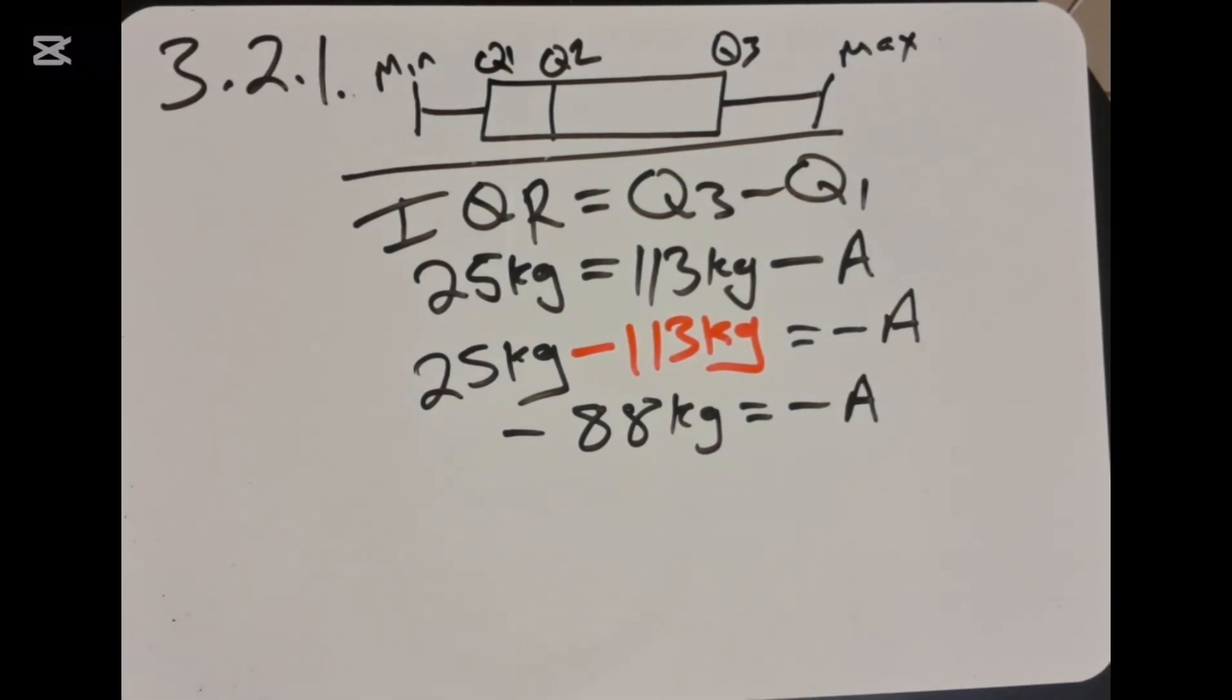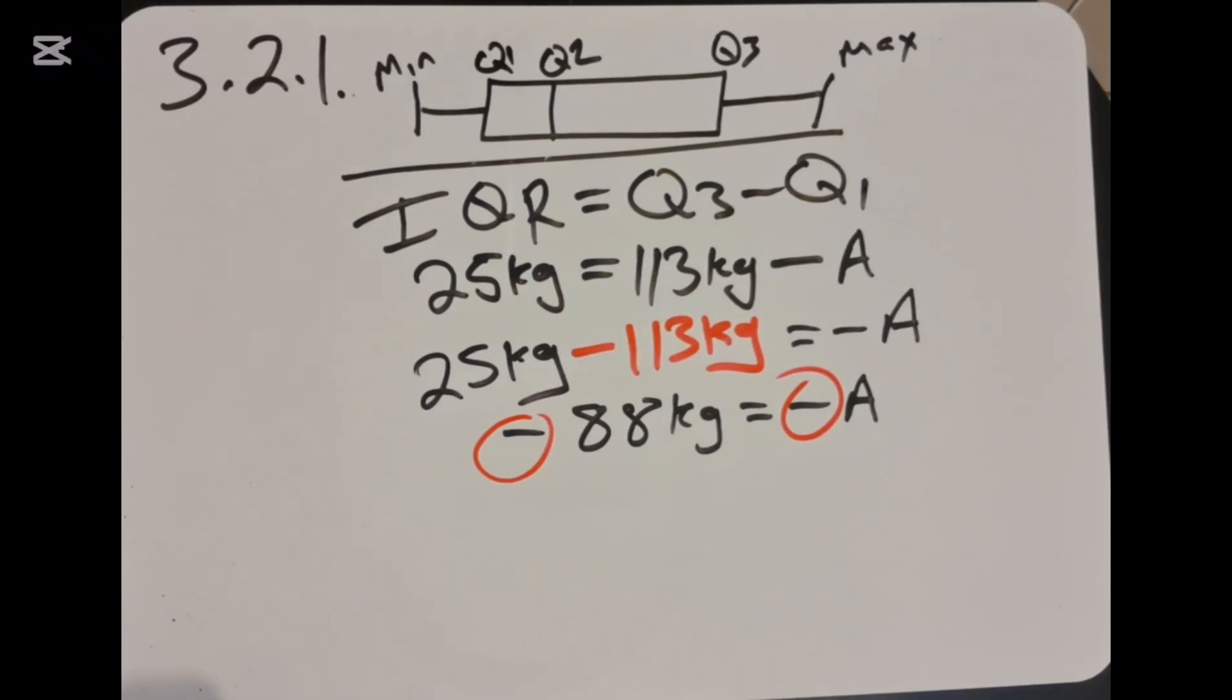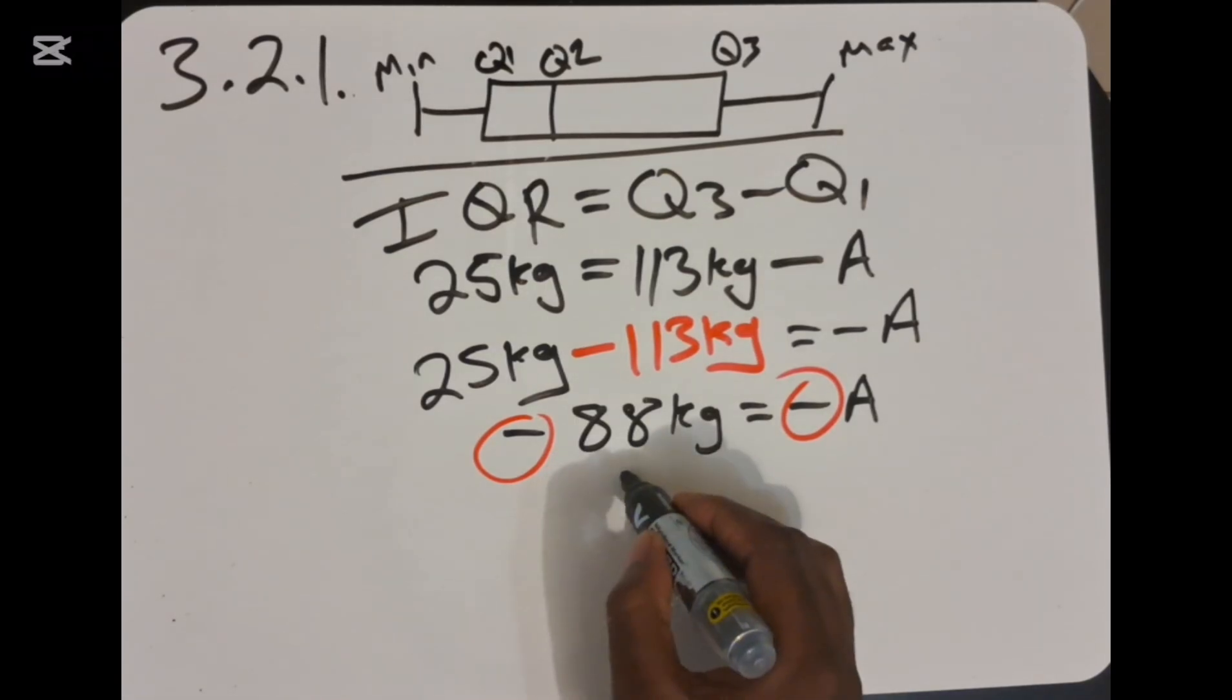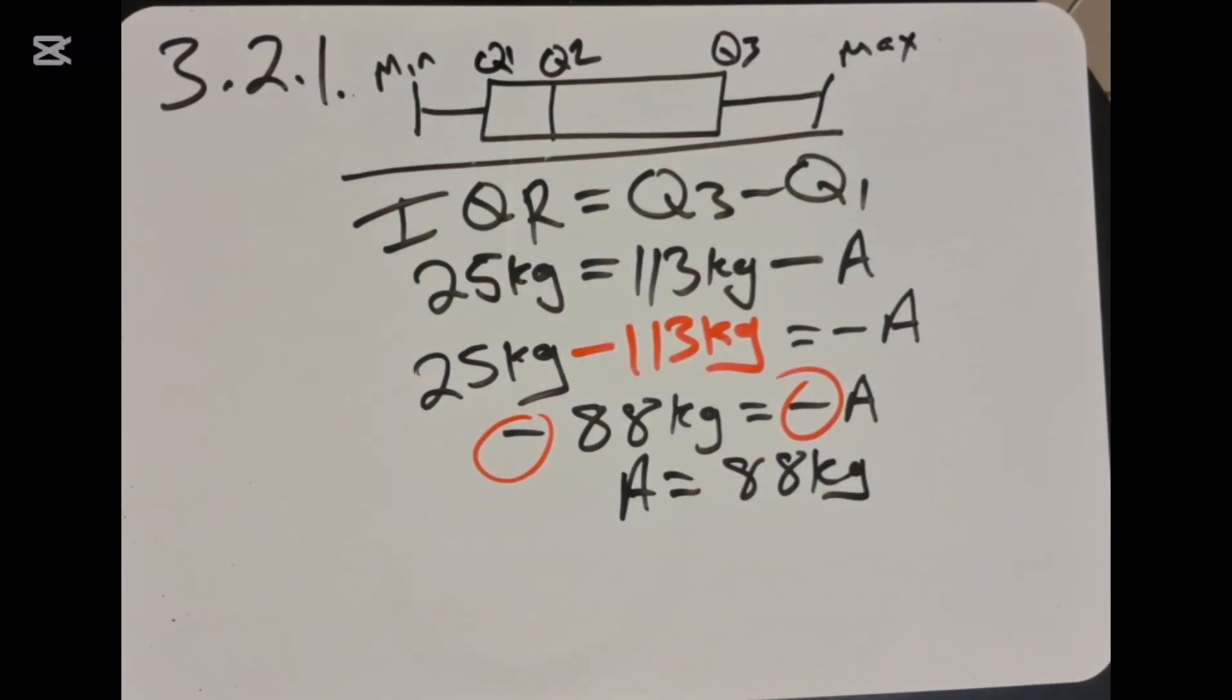We remain with negative 88 kg is equal to negative A. If you check, we cannot have a negative weight. So because we are having negative this side and negative this side, we are allowed to cancel them to say that the value of A is equal to 88 kg.